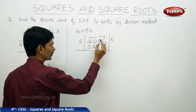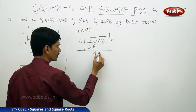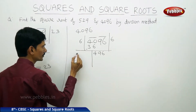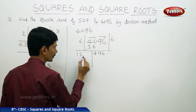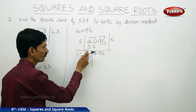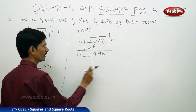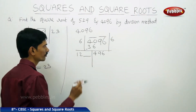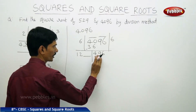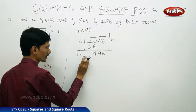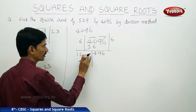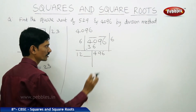Now bring down the other two digits which are under the bar — those are 96. Next, double 6 here, it becomes 12. The next digit should be filled. Whatever digit you take after 12, the number formed should be multiplied by the same digit in the quotient. In the number 496, the unit's place is 6. So here we can take 4 or 6 because 4 fours are 16 and 6 sixes are 36 — the largest digit is 6.